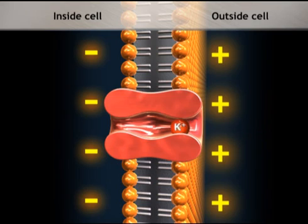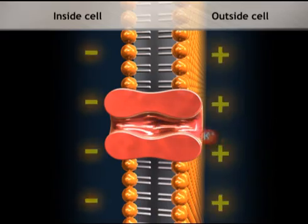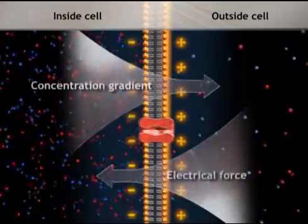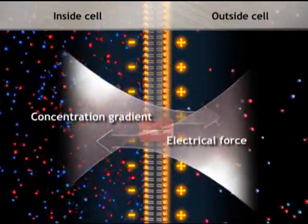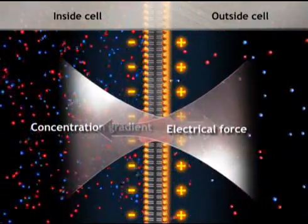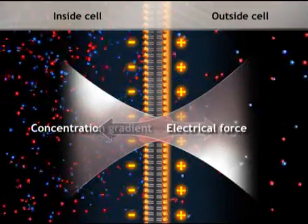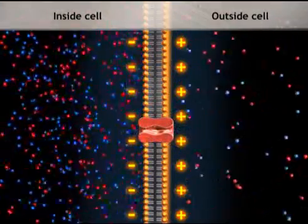Eventually, the electrical force pulling potassium ions into the cell exactly counterbalances the force of diffusion pushing them out. This is the equilibrium potential, where electrical and diffusion forces are equal and opposite, and there is no net movement of potassium ions through the channel, despite the concentration gradient.